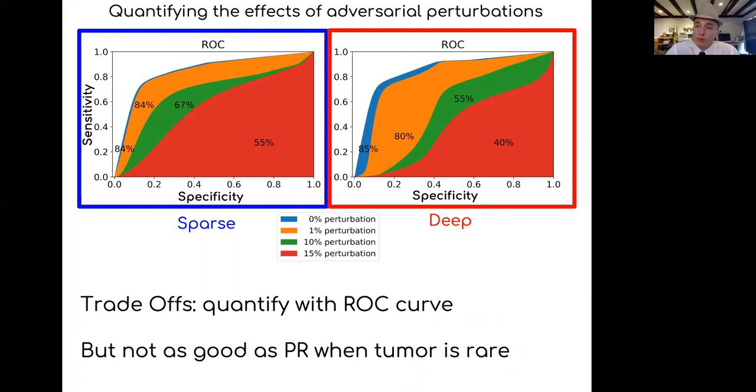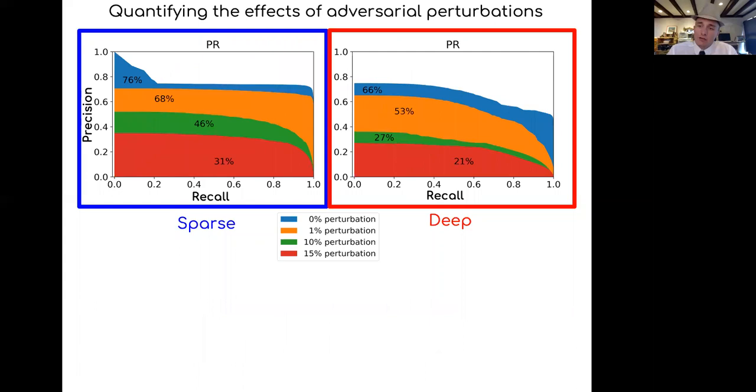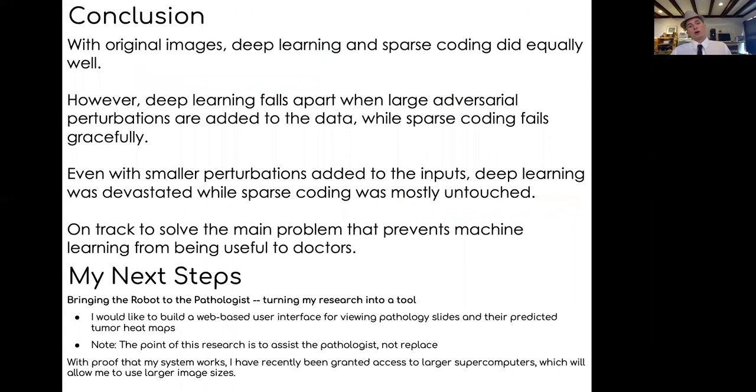I already showed you some ROC curves for both models earlier, before I attacked them. But this is actually after I attacked them. The blue here is the original without attack. Each other color represents either 1, 10, and 15% of the perturbation I added. The sparse model holds up pretty well, but as soon as we get to some meaningful features, it actually gets kind of confused. And the deep model is immediately confused by the perturbations. I only use ROC because it's used in the medical field and because other people used it who also did the same task. But there's actually very few cancer data points in my entire data set, so it's actually better to use a PR curve, which is better for accounting for highly unbalanced data sets. We see the same thing here - deep model is completely obliterated.